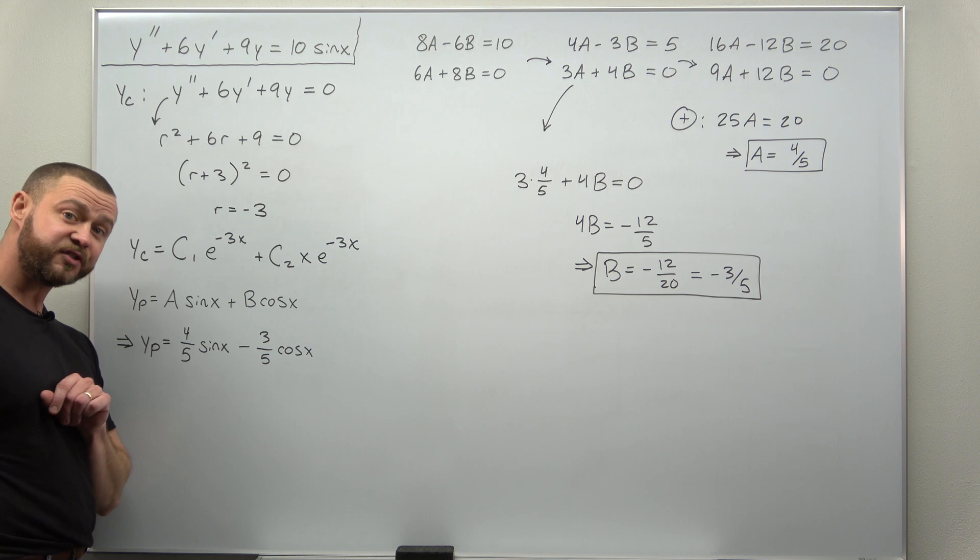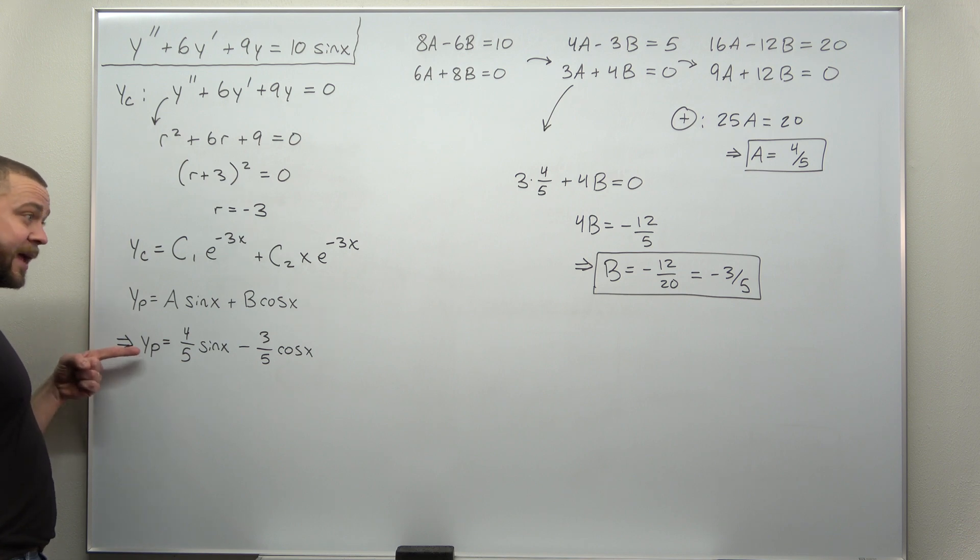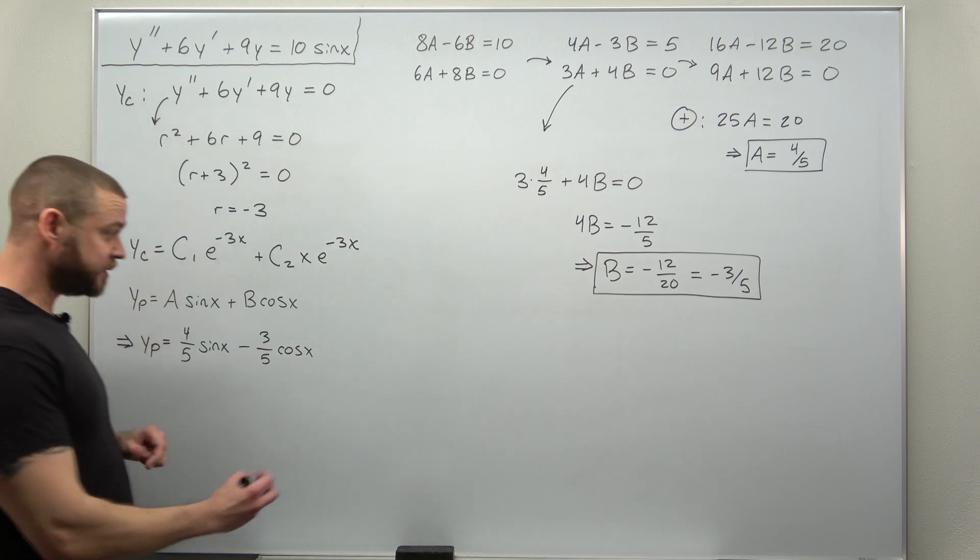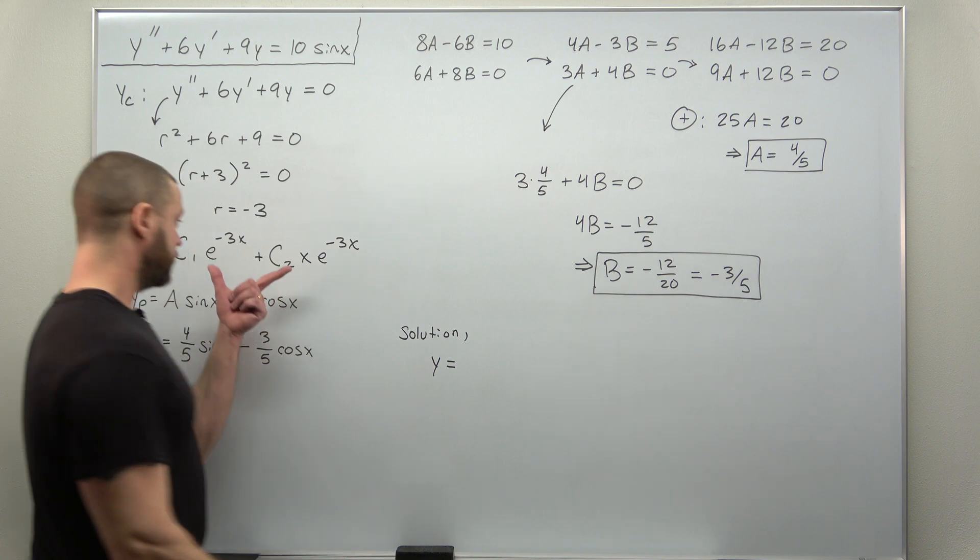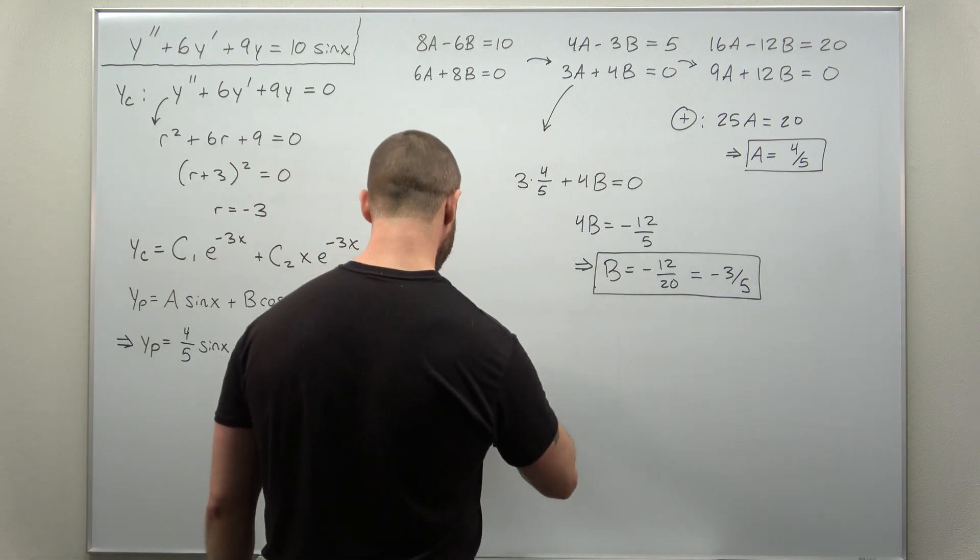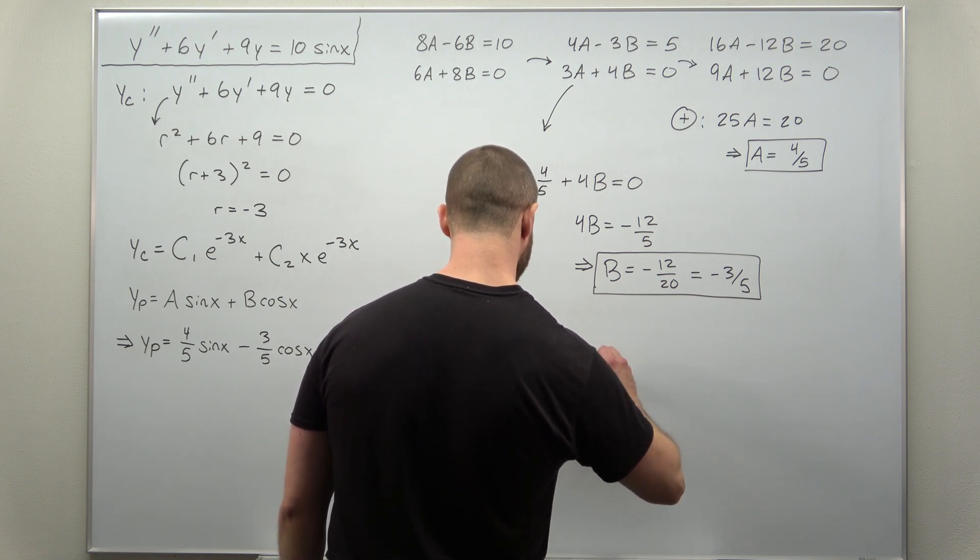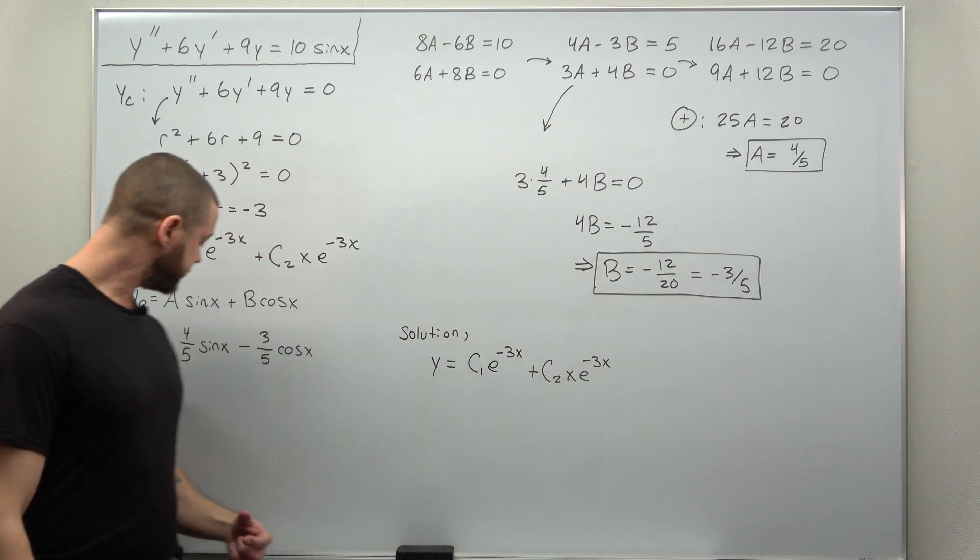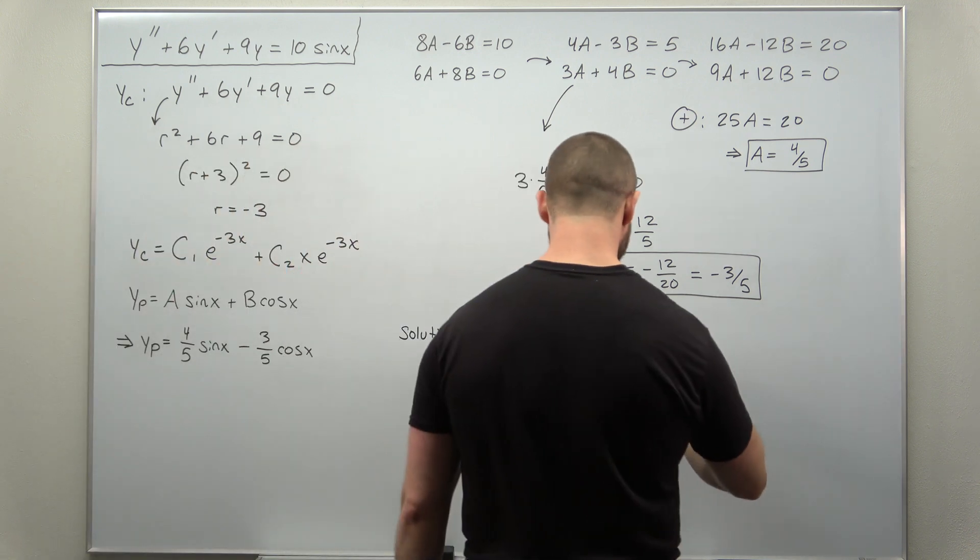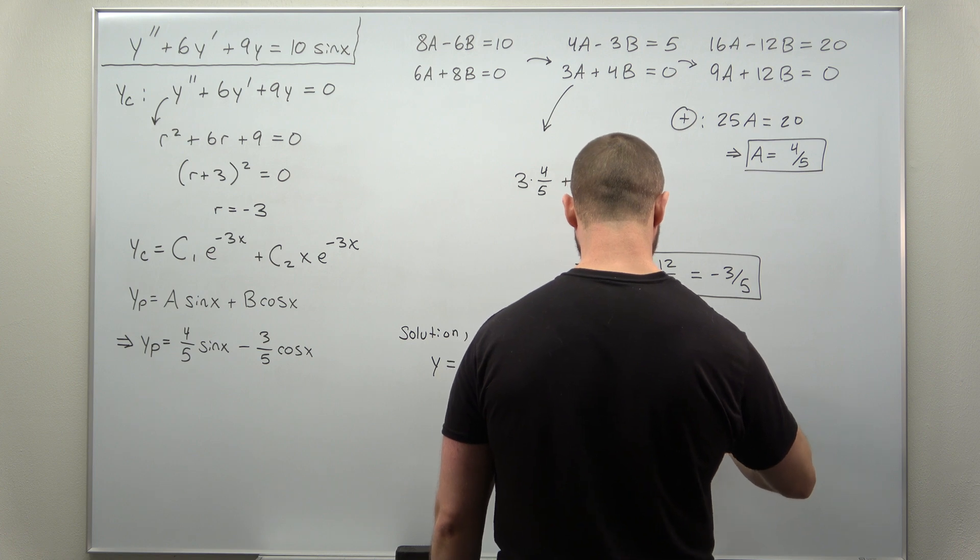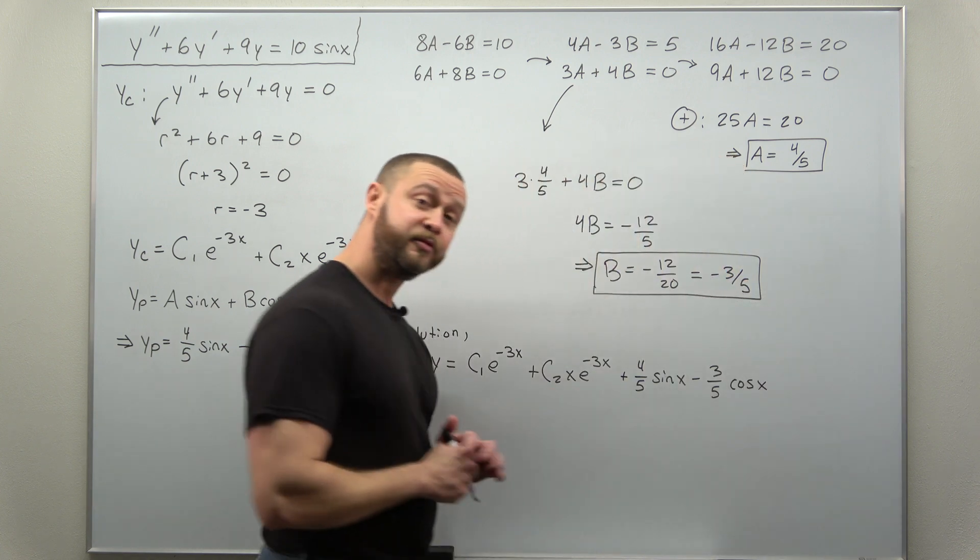Remember for a non-homogeneous ODE, your full solution is a combination of your complementary solution and the particular solution. So if we just put them together, we'll get our solution. Take your complementary solution, c1 e to the negative 3x, plus c2x e to the negative 3x. And we add to the complementary solution our particular solution, 4 fifths sine of x, minus 3 fifths times cosine of x.